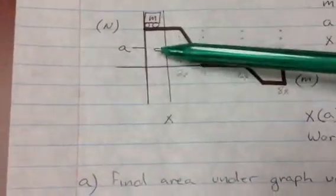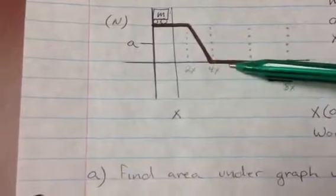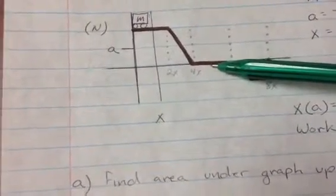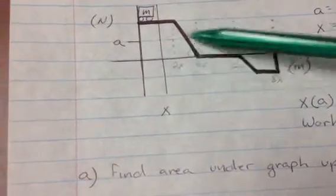do the same thing, this part plus this part plus this part. Notice there's no area under the graph for that part, so it's basically what answer 2 was.